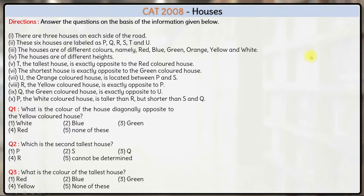Here in this question we are given that there are three houses on each side of the road — three houses on one end and three houses on the other end. The houses are of different colours and the names are P, Q, R, S, T and U. The colours are red, blue, green, orange, yellow and white. They are of different heights also. You have to arrange the houses in terms of their location on the street as well as in terms of their height.